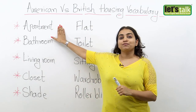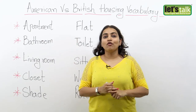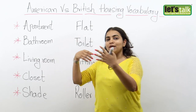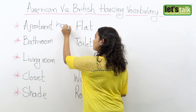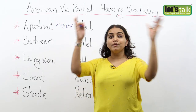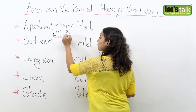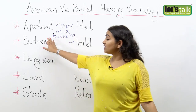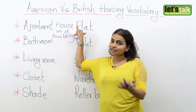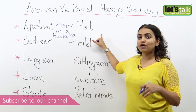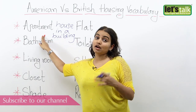In American English, an apartment is basically a house which consists of a living room, a bedroom, a kitchen, and a bathroom. This same kind of house in a building in the UK or England would be called a flat. So if you were in the UK you would say I live in a flat, but someone in America would say I live in an apartment.